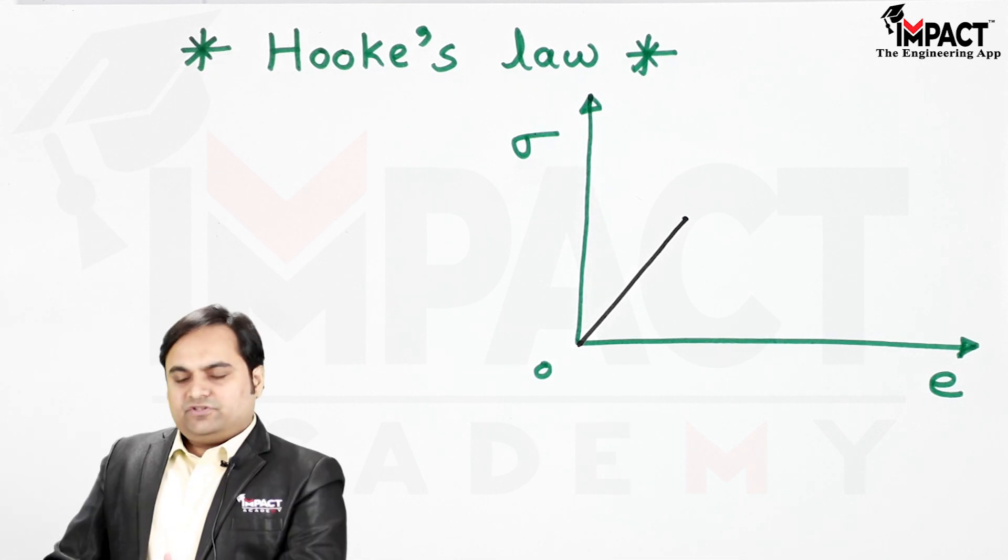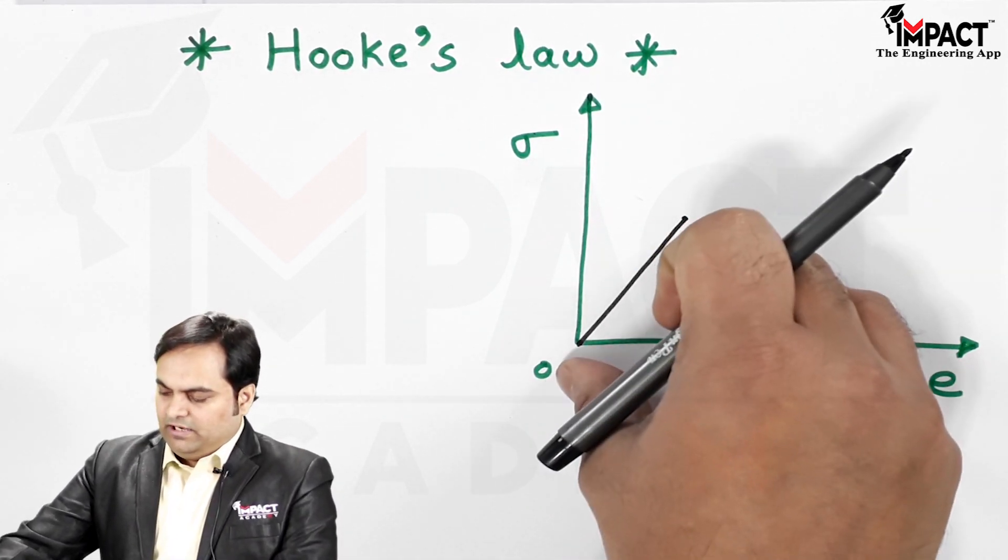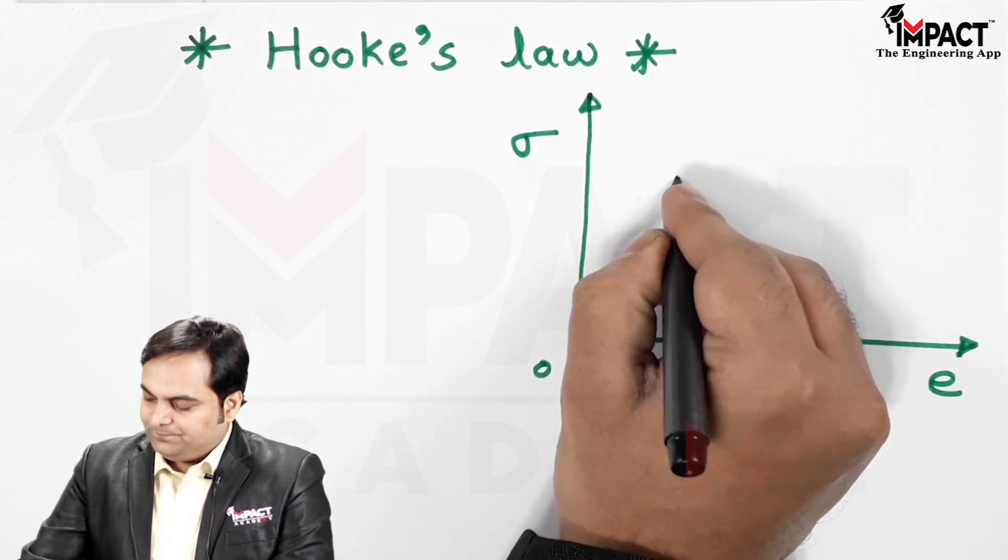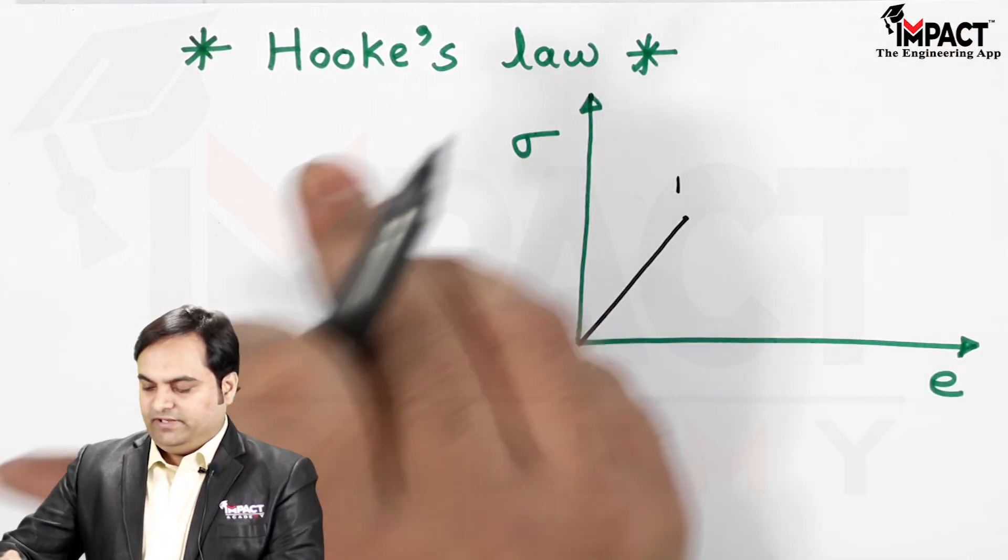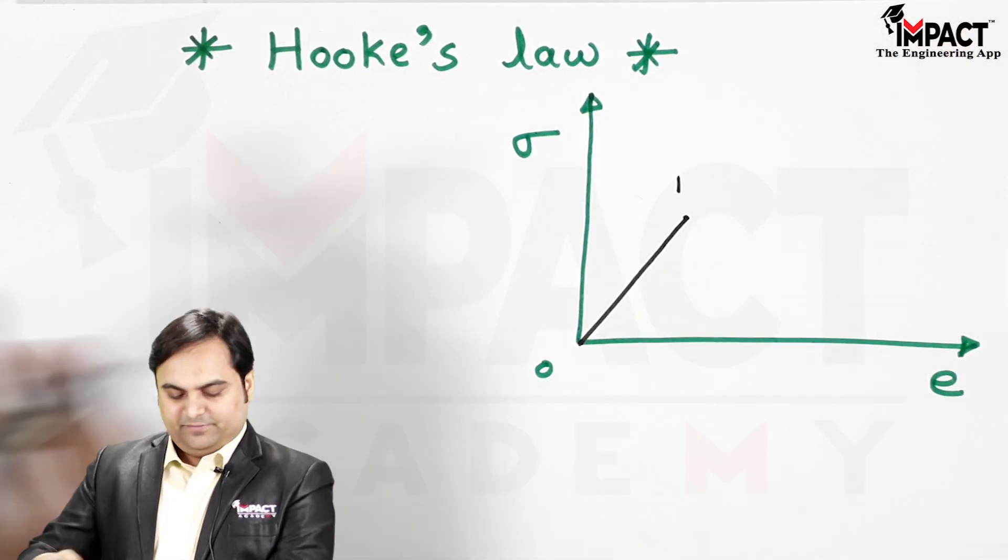The stress versus strain graph which I have drawn here is only up to the proportional limit, which is 0 to 1. It can be drawn further, but for Hooke's law only this much is required, that is up to the proportional limit.